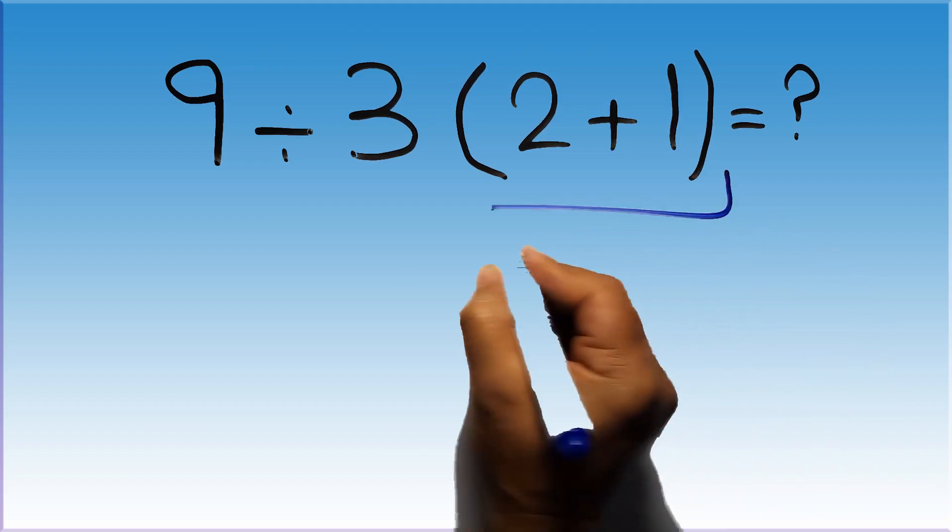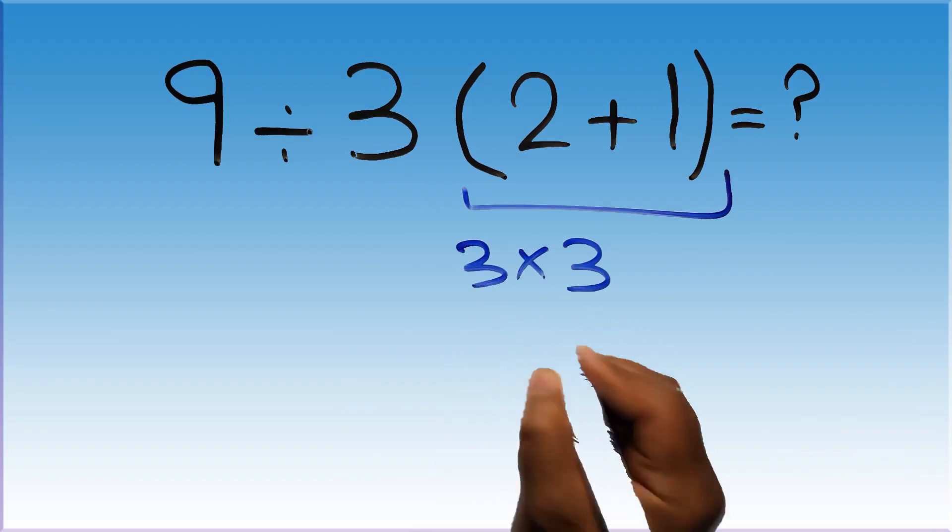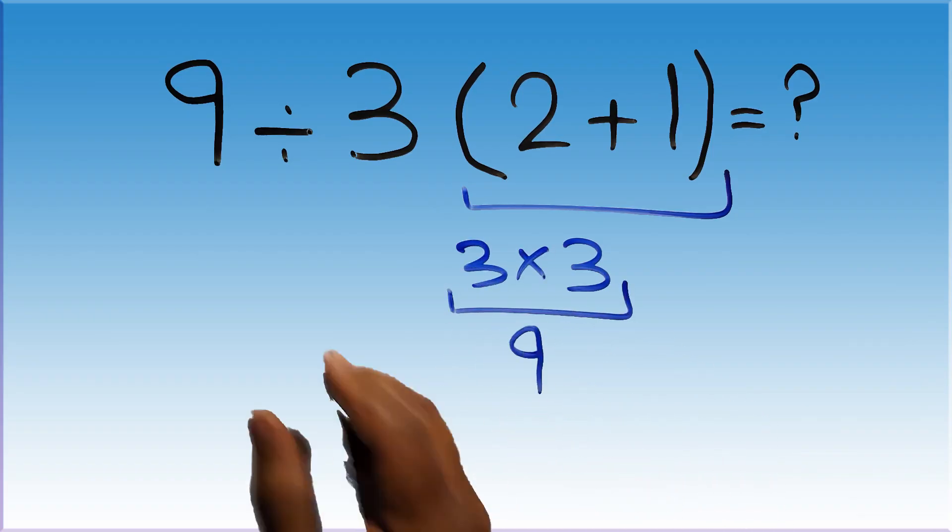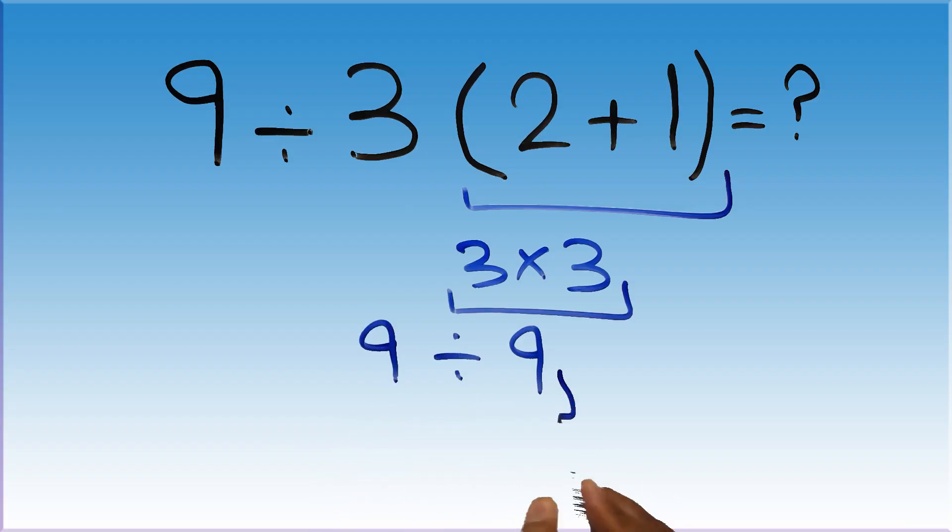2 plus 1 gives us 3, and 3 times 3 is just 9, so 9 divided by 9 gives us 1. But this answer is not correct because according to the order of operations, first we